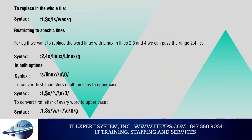To replace in the whole file: Specify the range using line numbers. To specify the whole file use range 1,$ — where 1 is the first line and $ indicates the end of the file. Example: :1,$s/is/was/g replaces all occurrences of 'is' with 'was' throughout the entire file.